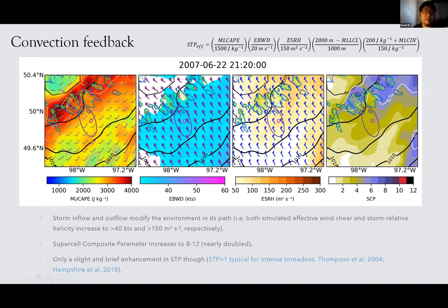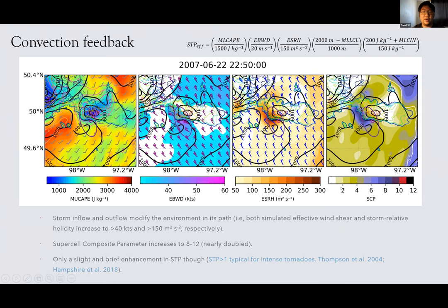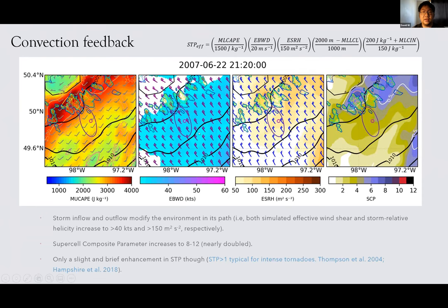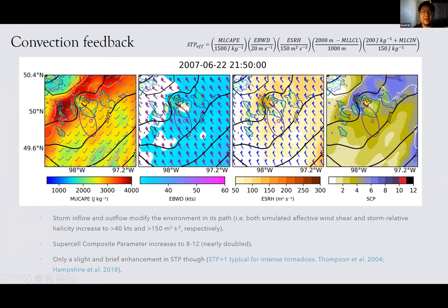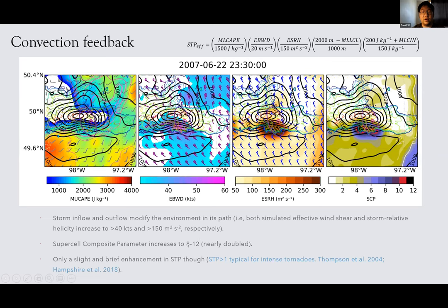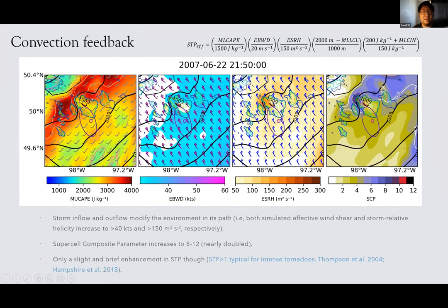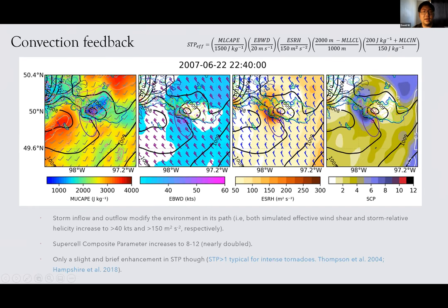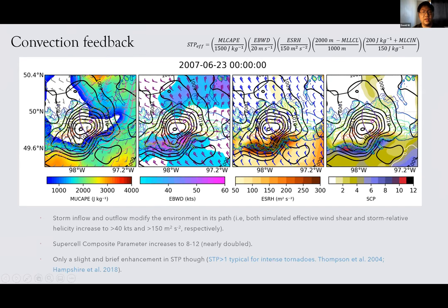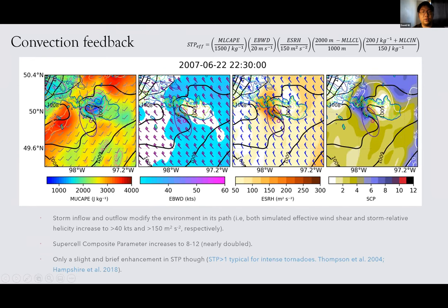After the simulated Eli supercell initiated, it also modifies its local environment. Both effective wind shear and effective storm-relative helicity see strong enhancement within the storm's path, and as a result the supercell composite parameter within the storm's inflow region nearly doubled — from 4–6 before to around 8–12. However, the significant tornado parameter showed only a slight and brief enhancement, probably because mixed-layer CAPE gets rapidly consumed by the supercell and mixed-layer CIN increases due to weakening solar heating. If the storm were able to tap unstable air slightly to the southwest, the significant tornado parameter may be significantly enhanced.